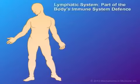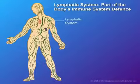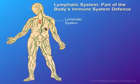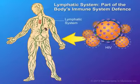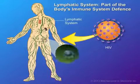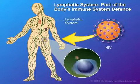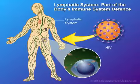The lymphatic system extends throughout the body and is part of the body's immune system defense against infection. When HIV enters the body, it establishes itself in the lymphoid tissue. Circulating CD4 cells are then targeted and infected by the HIV virus lying in wait.